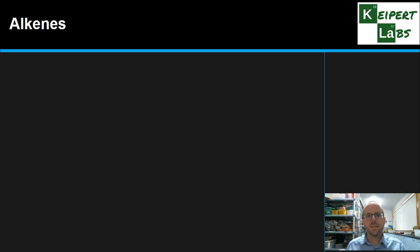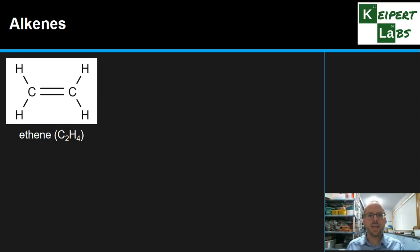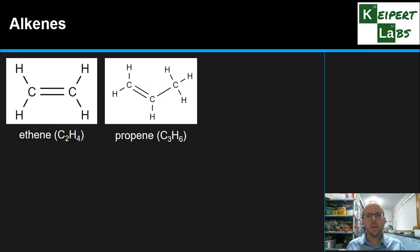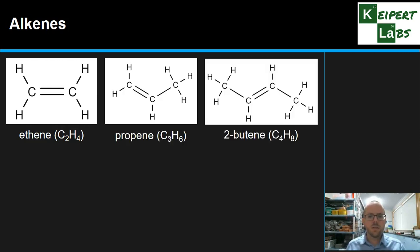We're now going to look at alkenes. I'm going to show you some examples. So we've got ethene, we've got propene, we've got 2-butene. The alkenes contain one or more carbon-carbon double bonds. You can see these features in each of these three structures, just between the carbons. All the other bonds are single bonds here.